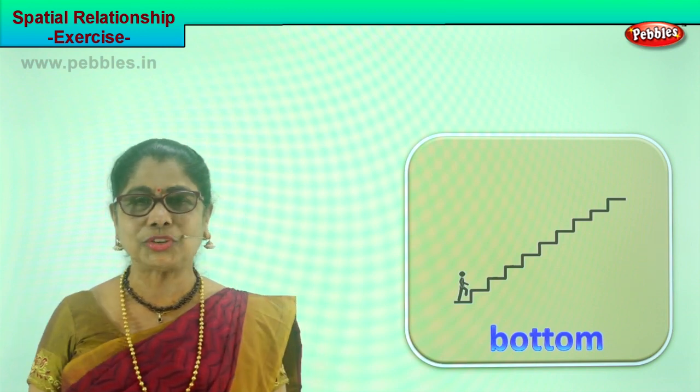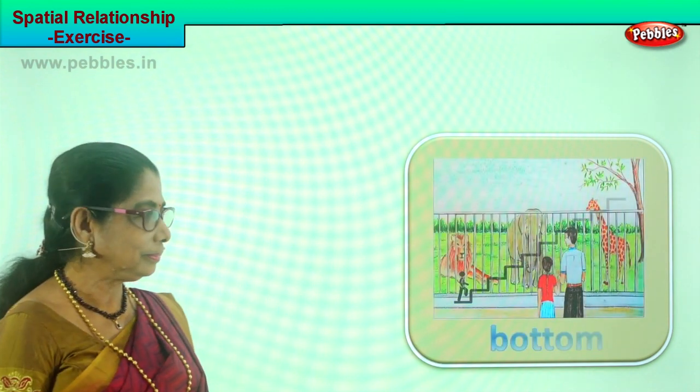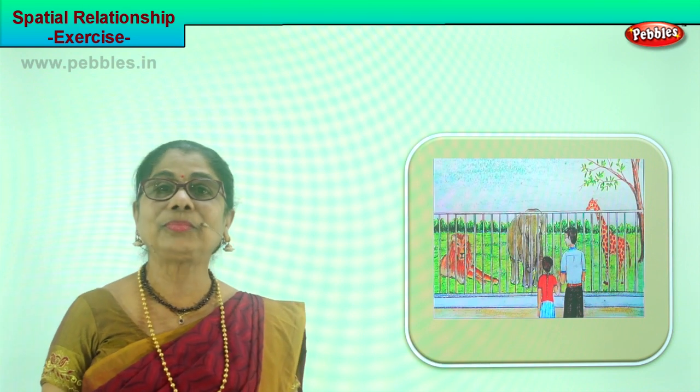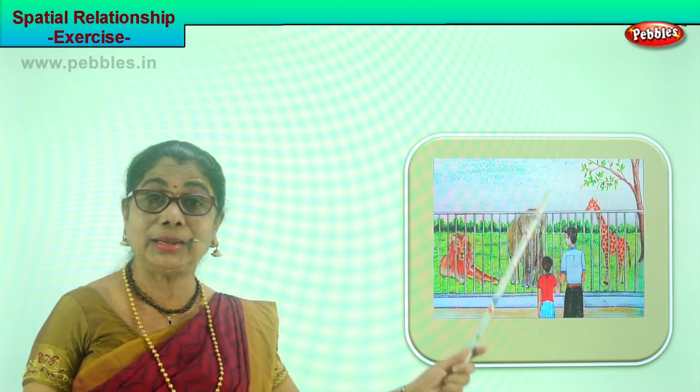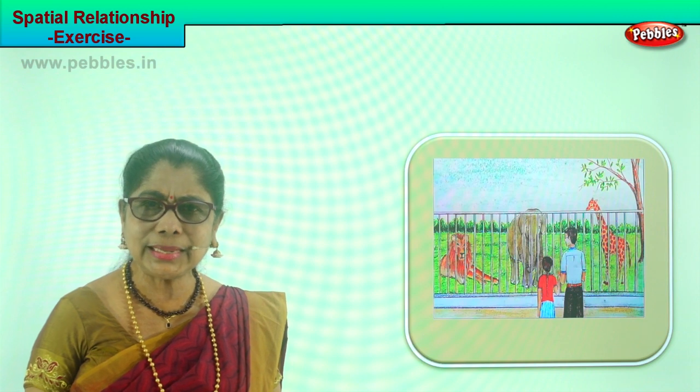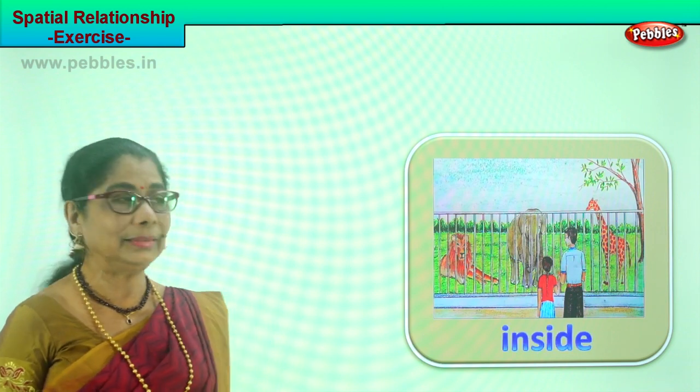Let's look at another picture. It's a zoo. Where are the children? Where is the little girl and father standing? Outside the zoo. What are they doing? Looking into the cages. What is inside the cage? Animals.